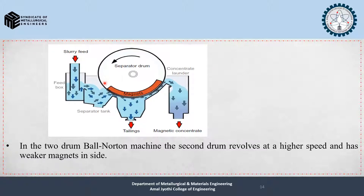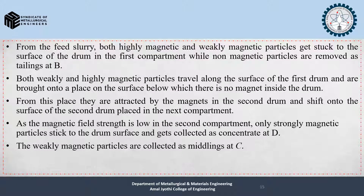In the 2-drum Ball-Norton machine, from the feed slurry, both highly magnetic and weakly magnetic particles stick to the surface of the first drum while non-magnetic particles are removed as tailings at B. Both weakly and highly magnetic particles travel along the first drum surface and are brought to a place where there is no magnet inside the drum. From this place, they are attracted by magnets in the second drum. As the magnetic field strength is low in the second compartment, only strongly magnetic particles stick and are collected as concentrate at D, while weakly magnetic particles are collected as middling at C.